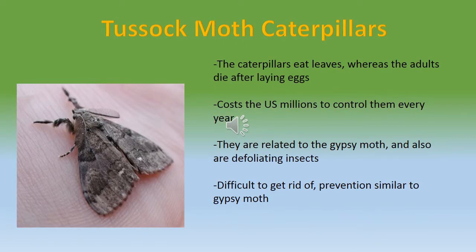The tussock moths are related to the gypsy moths, with a key difference: whereas the adult gypsy moths primarily defoliate trees, it is the tussock moth caterpillars or juveniles that defoliate trees. The caterpillars eat leaves, while the adults die after laying eggs. It costs the US millions of dollars to control them every year, and prevention techniques are very similar to those for the gypsy moth.